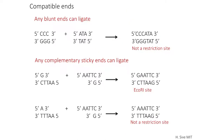Now let's look at some compatible ends. Any blunt ends can ligate. One of them is half of an SMA1 site, but the other one is a different site. They can ligate just fine because all you need are 3' and 5' ends to join together — you need the 3' hydroxyl and the 5' phosphate. Then ligase can come along and make a phosphodiester bond between those two molecules and join them back together again.